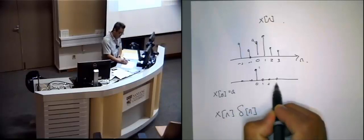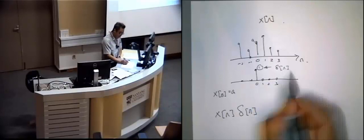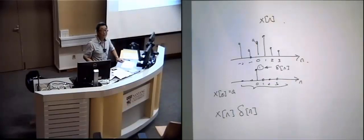This is 0, 1, 2, 3, and this is the delta(n). Delta(n) means the whole function. Yeah?